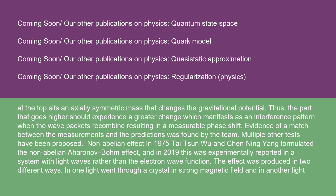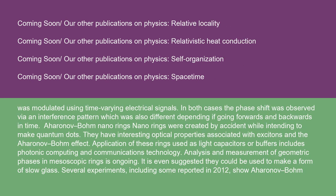Non-abelian effect: In 1975, Tai-Tsun Wu and Chen-Ning Yang formulated the non-abelian Aharonov-Bohm effect, and in 2019, this was experimentally reported in a system with light waves rather than the electron wave function. The effect was produced in two different ways. In one, light went through a crystal in strong magnetic field, and in another, light was modulated using time-varying electrical signals. In both cases, the phase shift was observed via an interference pattern, which was also different depending if going forwards and backwards in time.